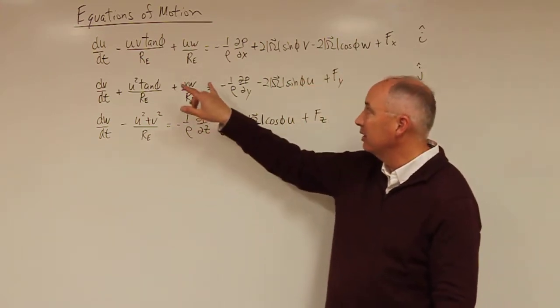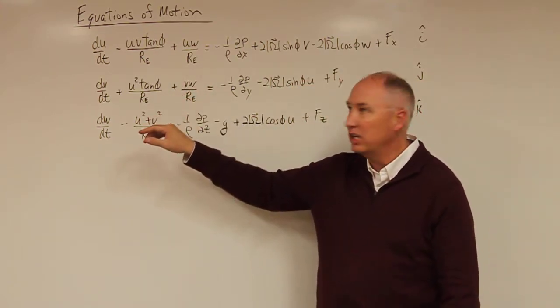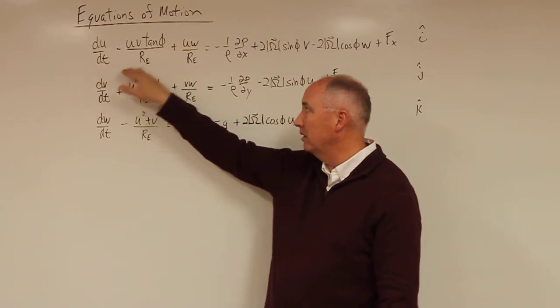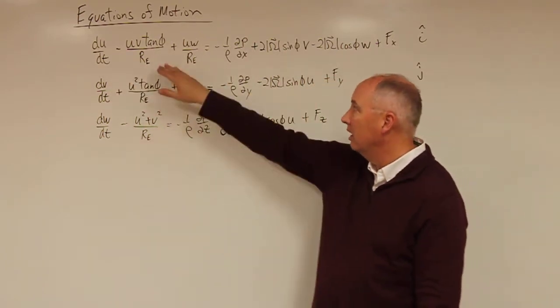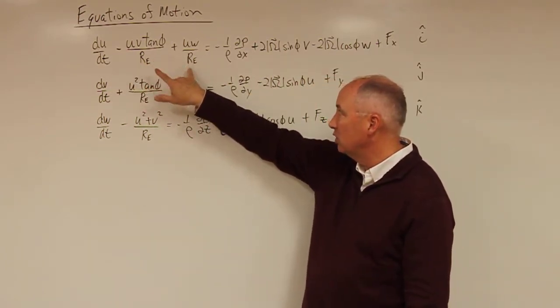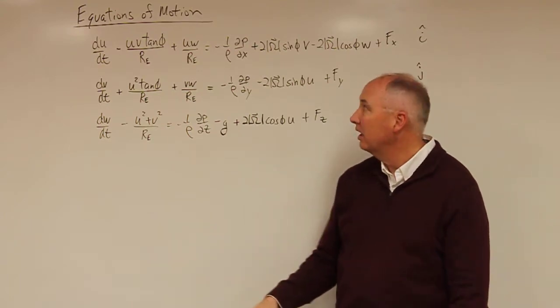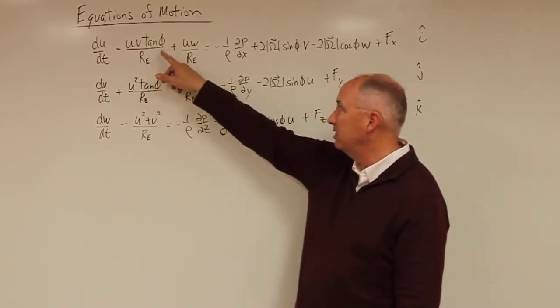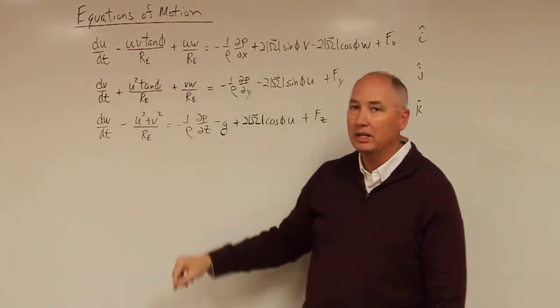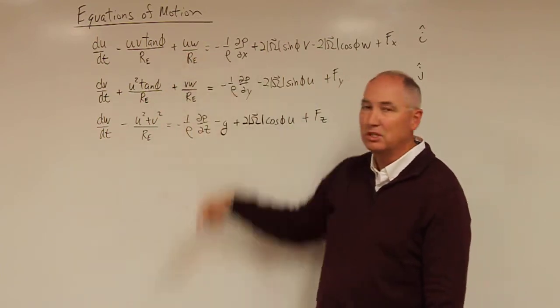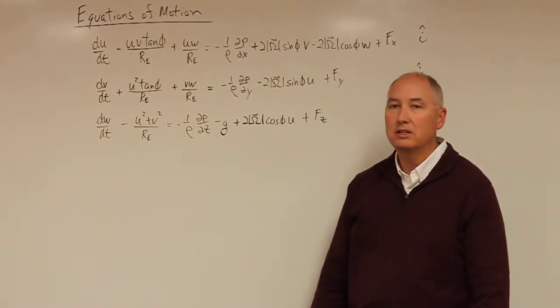I'm not going to go into the details of the derivation, but for the east-west direction, the two, what we call spherical terms are u v tangent latitude over the radius of the earth plus u times w divided by the radius of the earth.